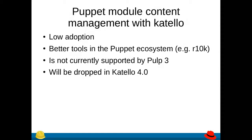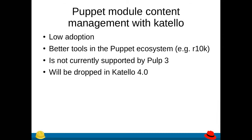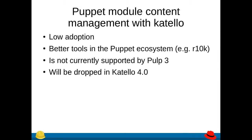The next point is the Puppet module content management with Katello. We've seen very low adoption of this — I believe the numbers were in the 10 to 20% of Katello users who actually use Puppet modules. I believe the reason is that there are better tools in the Puppet ecosystem, such as r10k, that are used for managing Puppet modules and are not quite compatible with the way Katello works with lifecycle environments. Additionally, Puppet modules are not supported by Puppet at this time, which would make it very difficult to support them once we migrate to Pulp 3 in Katello. So support for Puppet modules in Katello will be dropped in Katello 4.0.